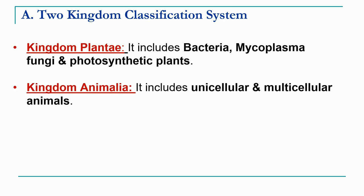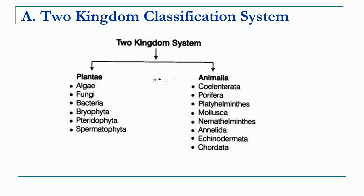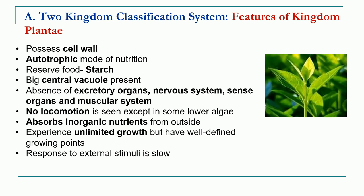Kingdom Animalia comprised all unicellular and multicellular animals. In the two-kingdom system, kingdom Plantae included algae, fungi, bacteria, bryophytes, pteridophytes, and all the spermatophyta. Kingdom Animalia comprised all animals, whether vertebrates or invertebrates, all grouped together — including Cnidaria, Porifera, Platyhelminthes, Mollusca, Nemathelminths, Annelida, Echinodermata, and all the chordates, all clubbed together into the single kingdom Animalia.